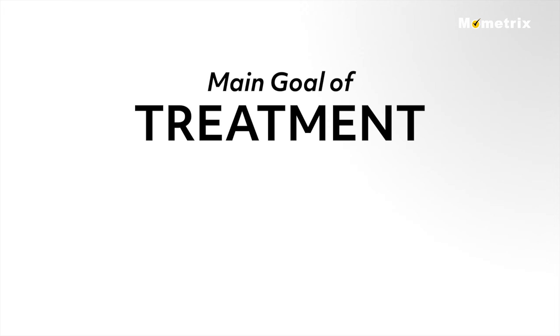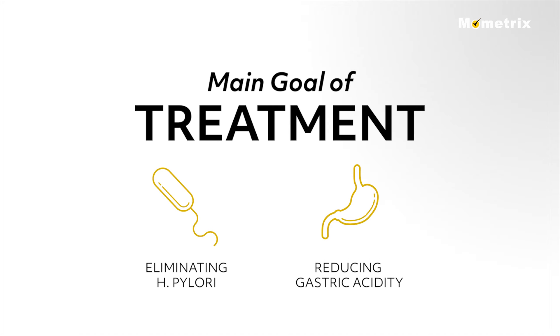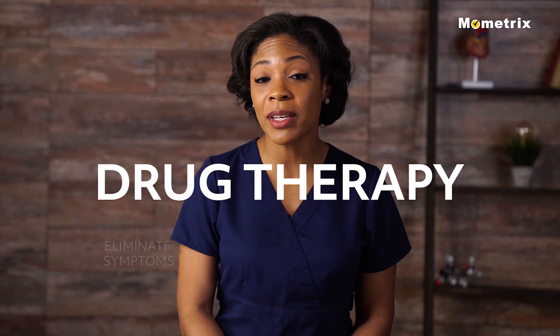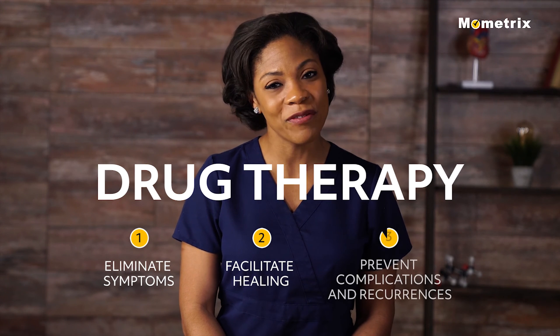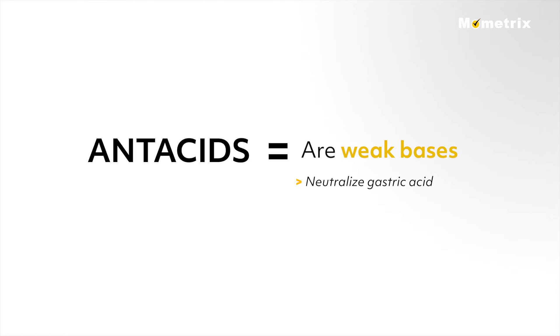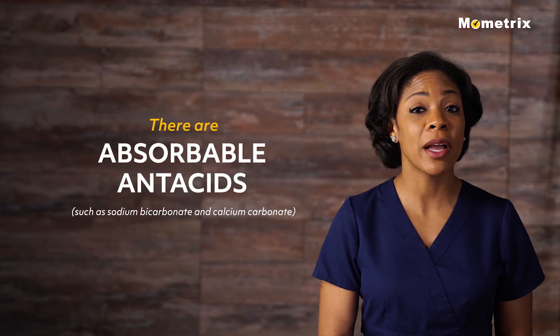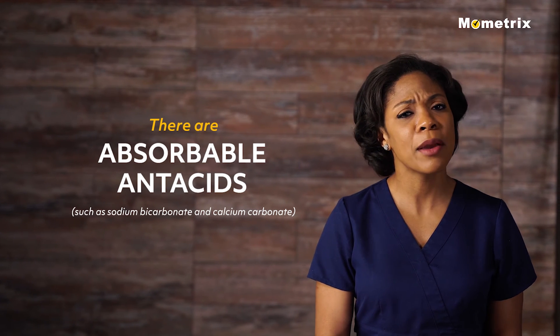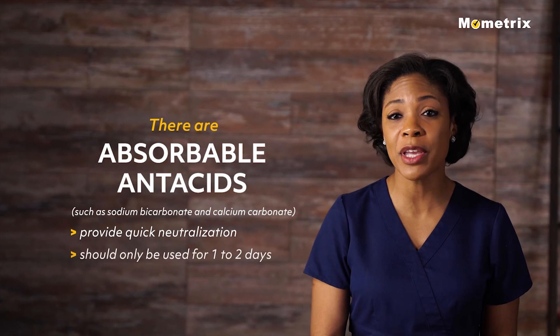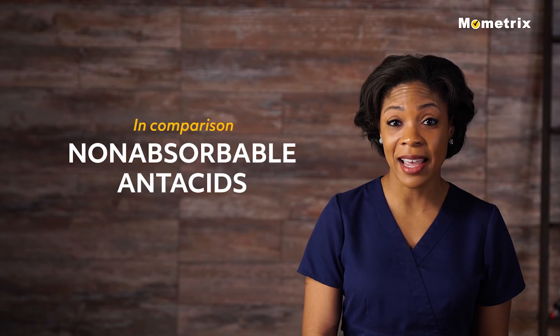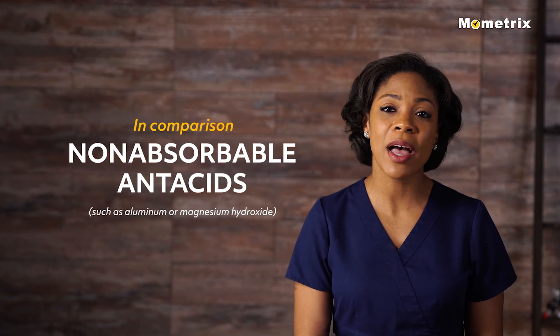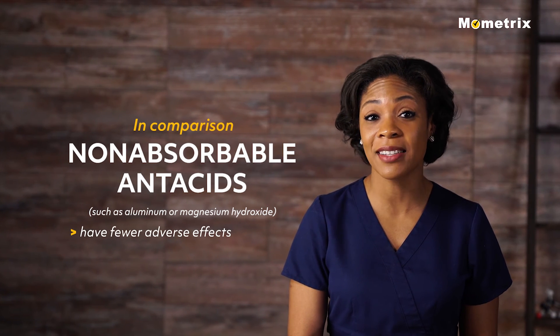The main goal of treatment for peptic ulcers includes eliminating H. pylori when present and reducing gastric acidity. Drug therapy is intended to eliminate symptoms, facilitate healing, and prevent complications and recurrences. Antacids are weak bases that neutralize gastric acid and are used to relieve symptoms, promote ulcer healing, and reduce recurrence. Absorbable antacids such as sodium bicarbonate and calcium carbonate provide quick neutralization but should only be used for one to two days. Non-absorbable antacids such as aluminum and magnesium hydroxide have few adverse effects and are preferred.